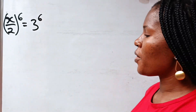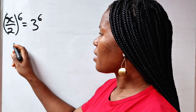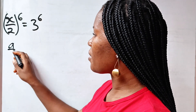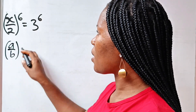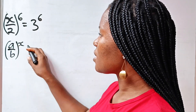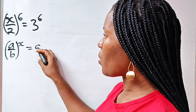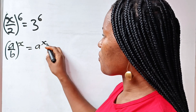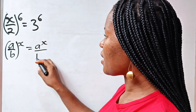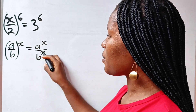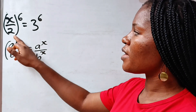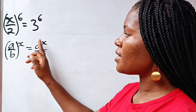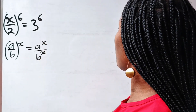First of all, when you have a divided by b raised to the power of x, this is equal to a to the power of x divided by b to the power of x. So we are going to express this side in this form.